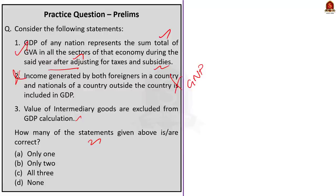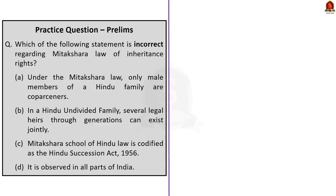Moving on to the second question: which of the following statements is incorrect regarding the Mitakshara law of inheritance rights? Statement one: under Mitakshara law only male members of the Hindu family are coparceners — this statement is correct. Coparceners means a person who has a share in the inheritance. Daughters are not coparceners under Mitakshara law. The Hindu Succession Act of 1956 was amended in 2005 and women were recognized as coparceners.